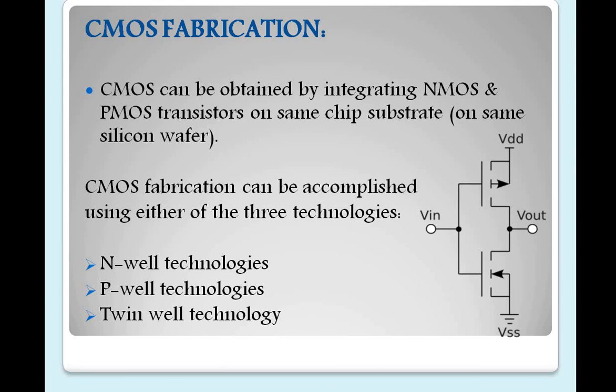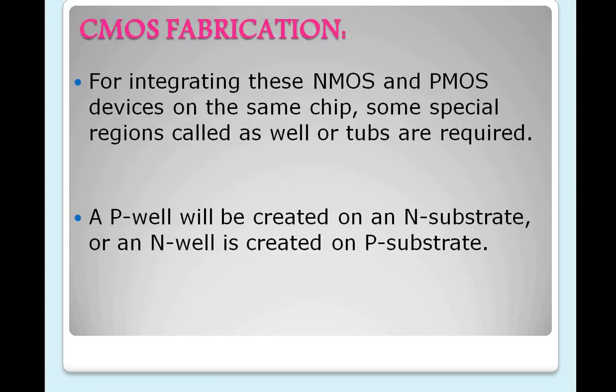So what is meant by N-well, P-well, or Twin-Tub technology? How we will do that we will see in the next slides. These are the 3 fabrication processes used in CMOS fabrication: N-well, P-well, and Twin-Tub. N-well and P-well will be similar technologies. In today's class I will go for the N-well fabrication process.